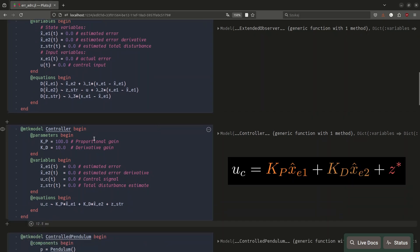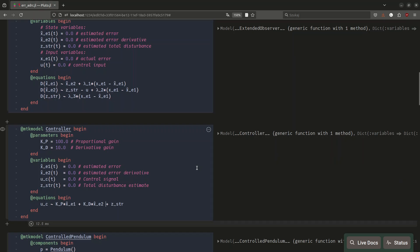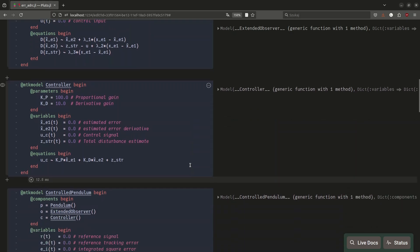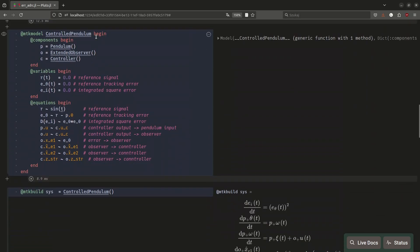Same goes for the controller. Still some arbitrary gains. We have the inputs formed from the observer for xe1 hat, xe2 hat, and z star, and, of course, you see u being calculated as our control signal. And here, as you can see, we have the prediction term, the derivative term, plus z star, which is the correction for total disturbance estimate. And once again, we have the control pendulum, being the system that combines them all.